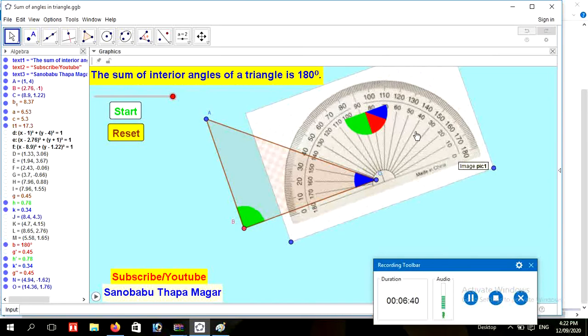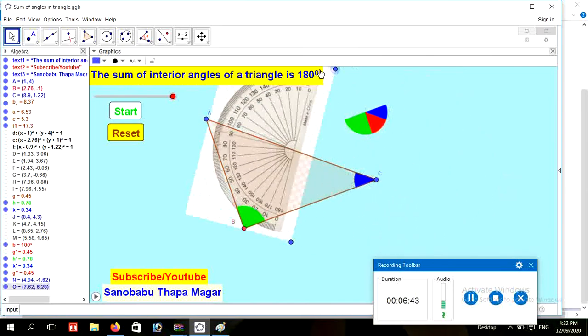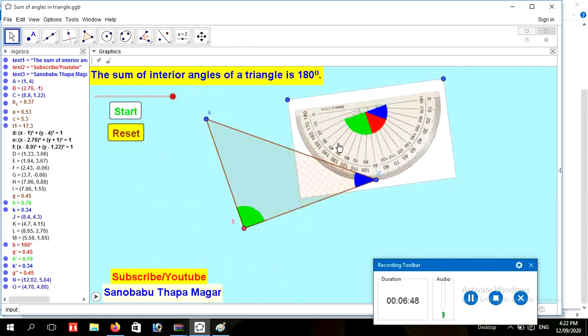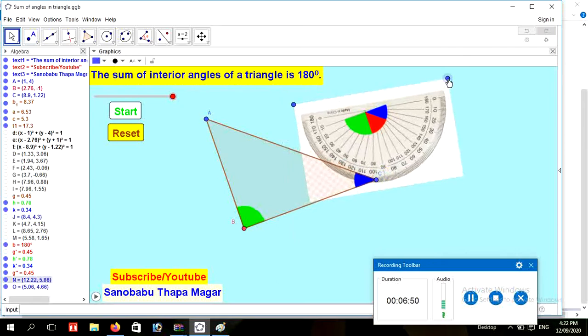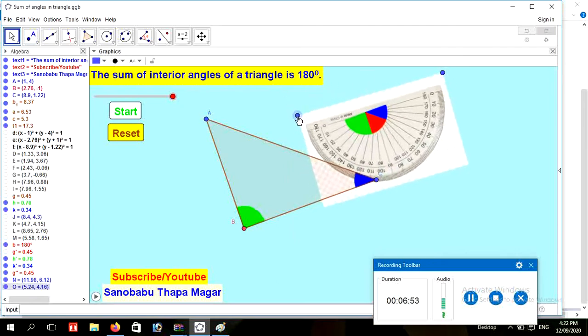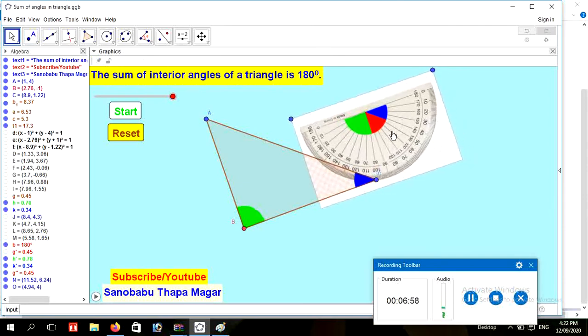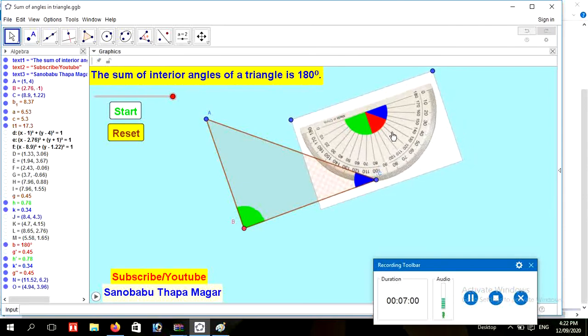A plus B plus C, this is in protractor form. The sum of the angles in protractor is 180 degrees. Now I am going to fit this in protractor. Here all angles are accurately fit with this protractor. That's why the sum of interior angles of triangle is 180 degrees.